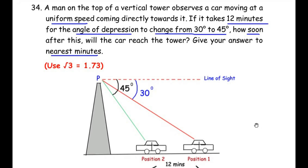Let us understand this question using a rough figure. The man standing on top of the vertical tower is represented as point P. The man observes horizontally from the top of the tower — that is called the line of sight. From that line of sight he makes an angle downwards to look at the car moving at uniform speed, and that angle is called the angle of depression.